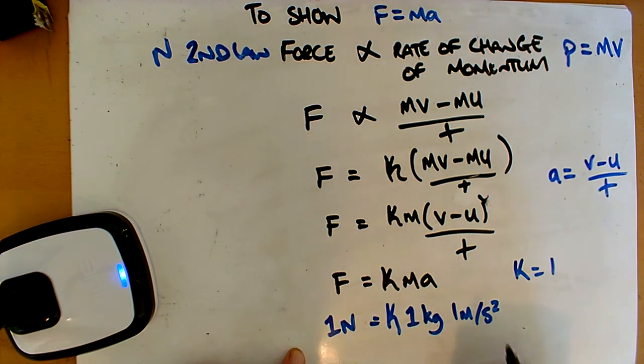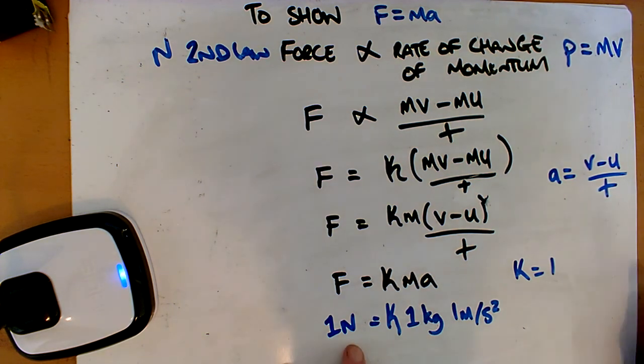We're going to define what a Newton is by saying it's for 1 kilo and 1 meters per second squared. So a mass of 1 kilo being accelerated at 1 meter per second squared is 1 Newton. We've just defined what a Newton is because it wasn't a thing before we made it. We made it a value.